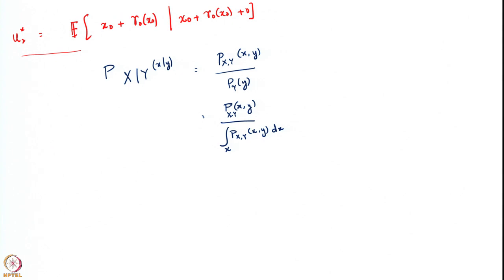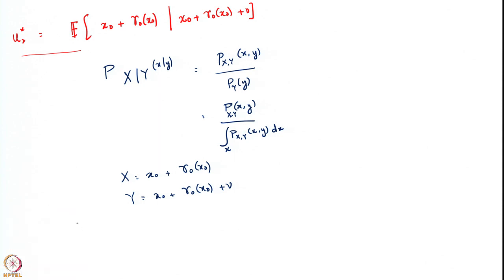You can see what is happening here. If you replace capital X by x_0 plus gamma_1(x_0) and capital Y by x_0 plus gamma_1(x_0) plus v, then p(x|y) would have gamma_1 present in each of these expressions, and when integrated over, the resulting expression would be a function of gamma_1. So u_2 star would be u_2 star of gamma_1.